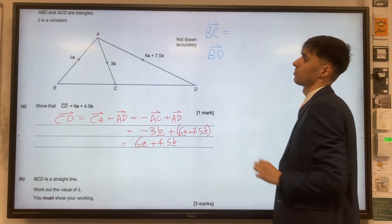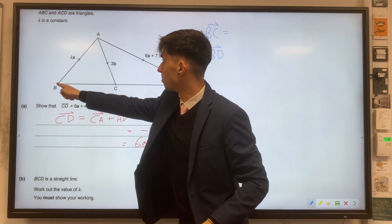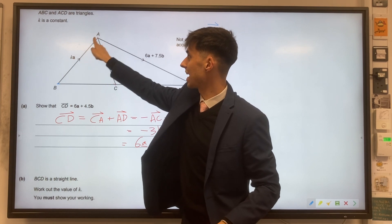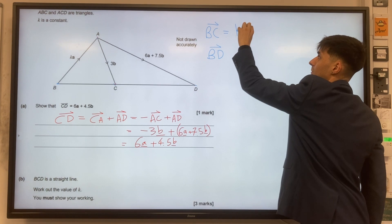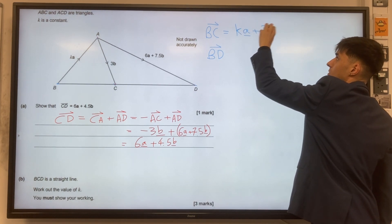So starting off then, B to C, we go from B to A. That's KA. And then we add our 3B. So we've got KA plus 3B.